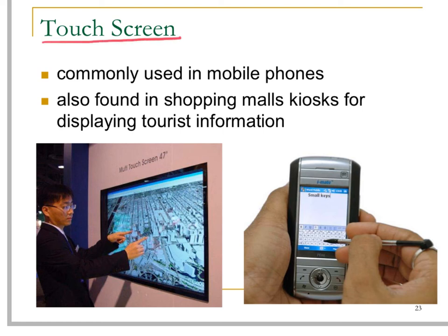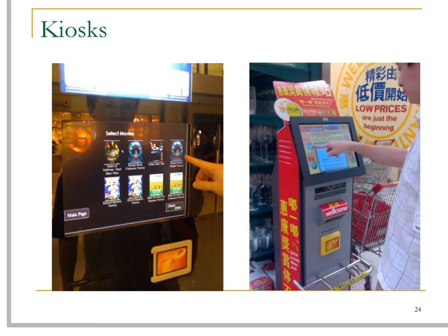Touch screens are now very commonly used in mobile phones. Touch screens are also commonly found in shopping malls and kiosks for displaying tourist information or information to customers. These are two very typical examples of kiosks found in shopping malls or supermarkets.